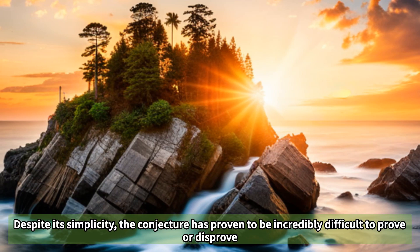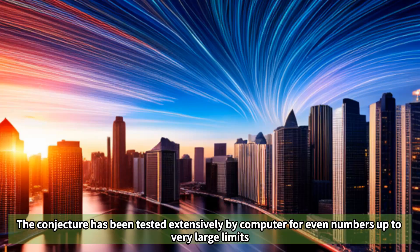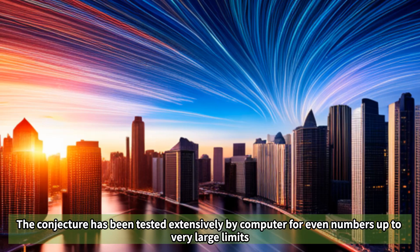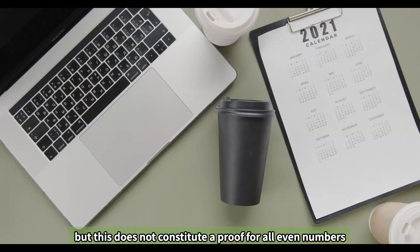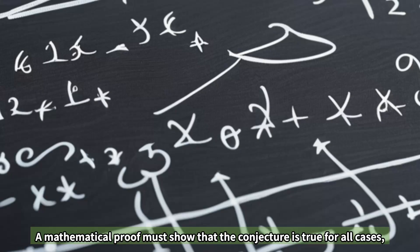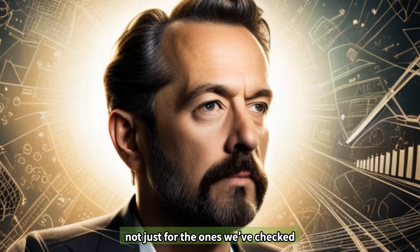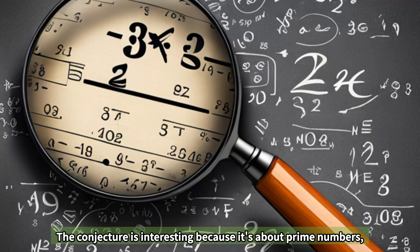Despite its simplicity, the conjecture has proven to be incredibly difficult to prove or disprove. The conjecture has been tested extensively by computer for even numbers up to very large limits and found to be true. But this does not constitute a proof for all even numbers. A mathematical proof must show that the conjecture is true for all cases, not just for the ones we've checked.